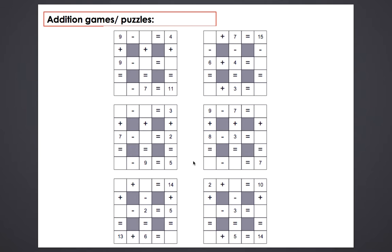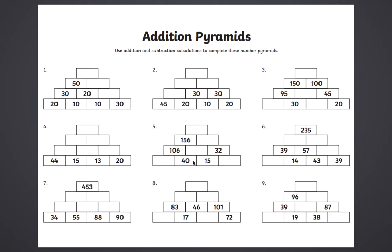Then we've got some addition pyramids. You did these earlier in the week in some of your home learning. Remember: you add up the numbers at the bottom to make the brick at the top, and as you get higher up you add the two numbers at the bottom together to make the brick above. On some of these, like number 9, there's a missing one — you could do a subtraction, so 39 take away 19, to get that missing number.